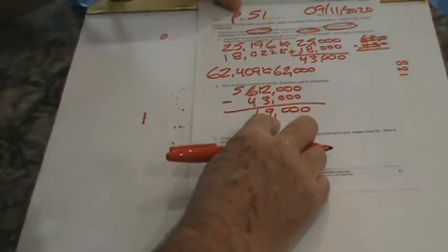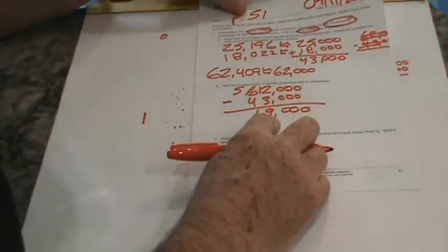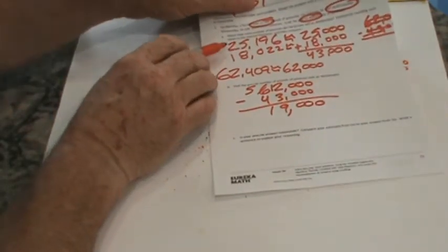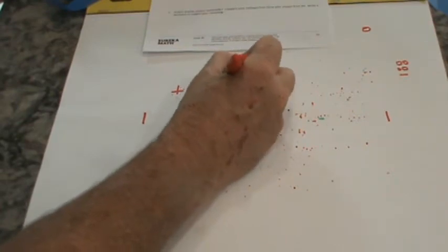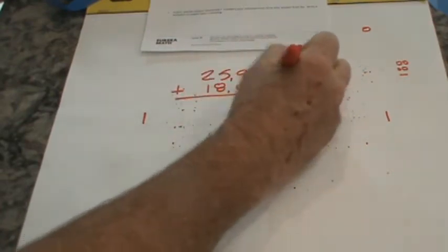Because we're gonna do this part too, but I'll do it on my big piece of paper. So about 19,000 pounds were sold on Wednesday. Now, our next part of the problem is find the precise number of potatoes sold on Wednesday. So now we're gonna use the actual numbers. Let's do that right now. 25,916 plus 18,022. Go ahead and pause the tape and figure that one out on your own. And welcome back.